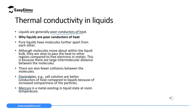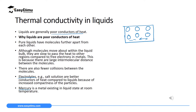But why are liquids poor conductors of heat? Remember, when we were discussing the particulate nature of matter, we said liquids have a structure whose particles are slightly far away from each other. There is some intermolecular distance between the particles, and the intermolecular force is very weak. These are the liquid particles.